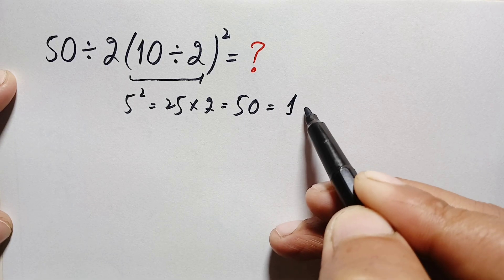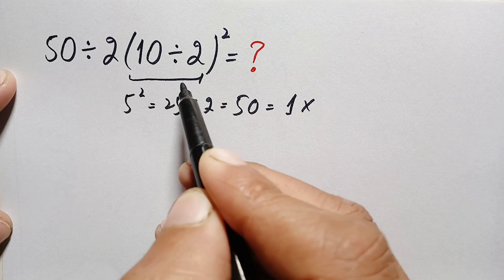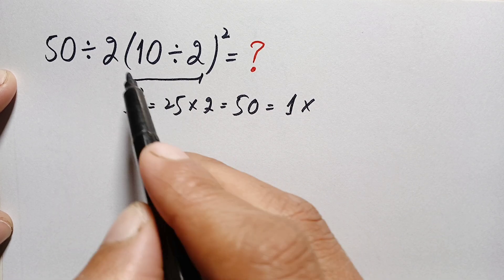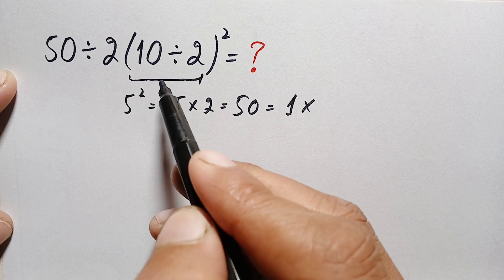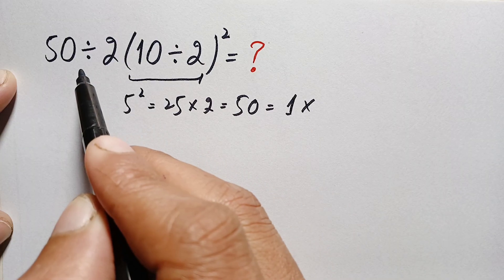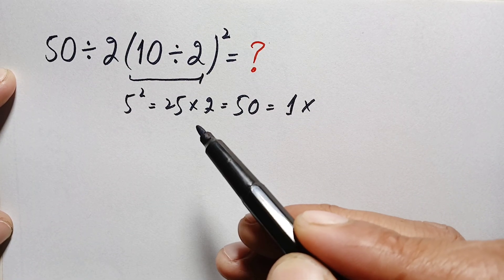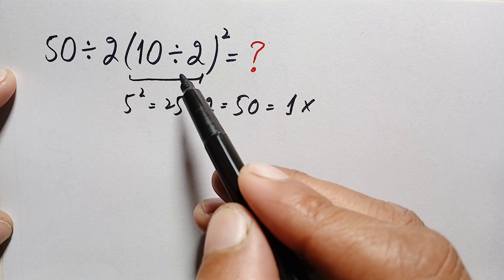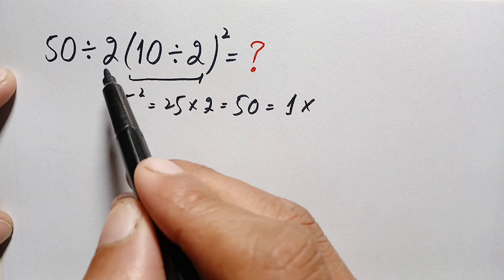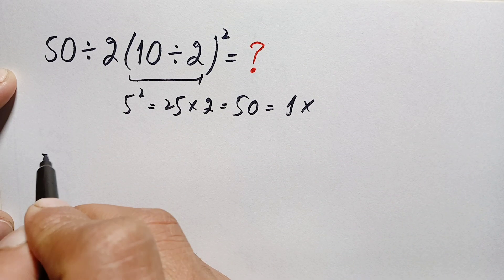But here, 1 is not the correct answer. Why? This is due to wrong operations. Look at the problem — we have four operations: parentheses, exponents, multiplication, and division. According to the rules of order of operations, we first simplify the parentheses, then exponents, then division, and last multiplication.